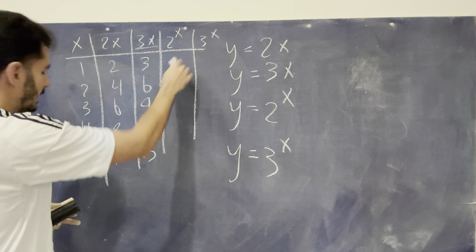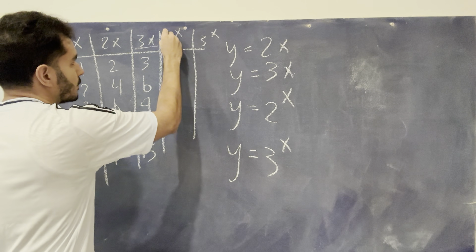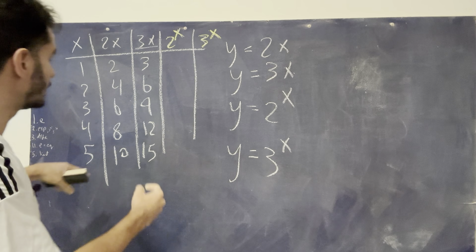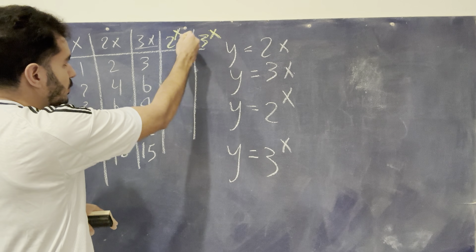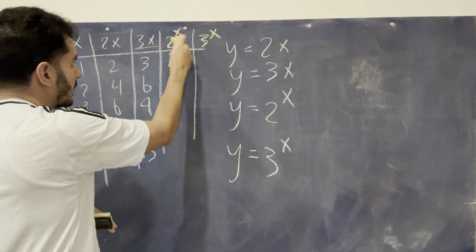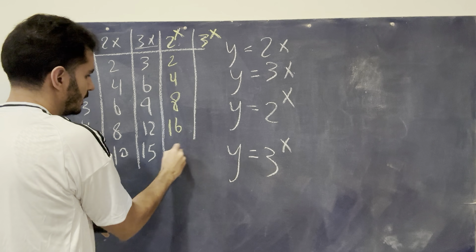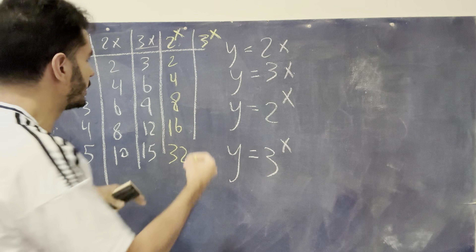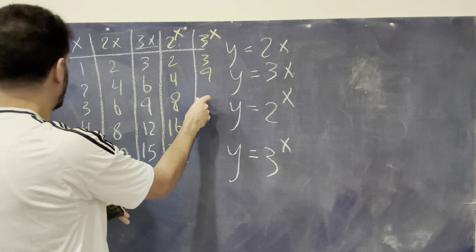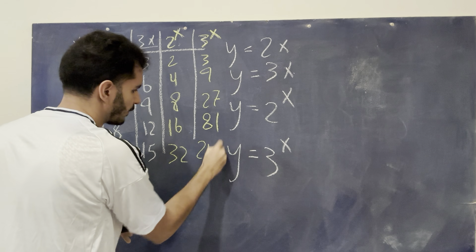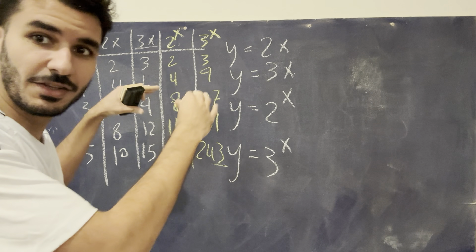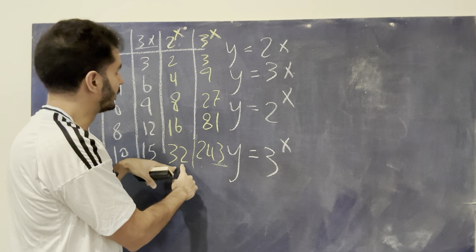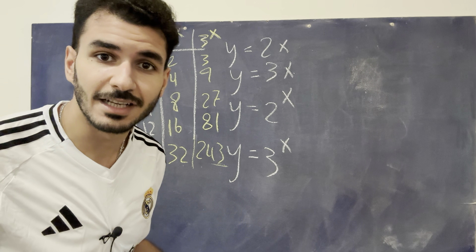Here's where the magic happens. Looking at 2^x and 3^x — watch how much faster they grow than the linear functions, and watch how fast they grow compared to each other. 2^x is basically a doubling function: 2, 4, 8, 16, 32. And 3^x is even crazier: 3, 9, 27, 81, 243. Comparing the rate of growth, these two exponentials are growing much faster than the linear functions. And between them, 3^x is growing much faster than 2^x — so imagine what 4^x, 10^x, or 20^x would look like.